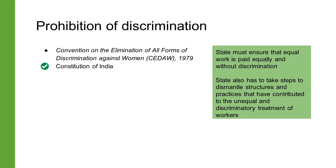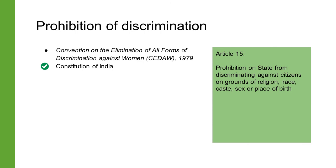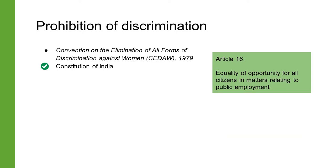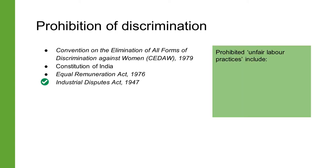In India, not only does the state have an obligation to ensure equal work is paid equally and without discrimination, it must also take steps to dismantle structures and practices contributing to unequal and discriminatory treatment of workers. Everyone has a fundamental right under Article 14 to equality before the law. Article 15 prohibits the state from discriminating against citizens on grounds of religion, race, caste, sex or place of birth, and empowers the state to make special provisions for special groups such as women, children, scheduled castes and scheduled tribes. Article 16 promises equality of opportunity in matters of public employment. However, India does not have a special law to address discrimination at private sector workplaces.